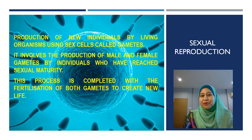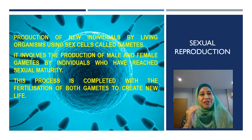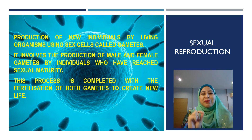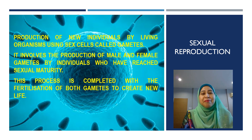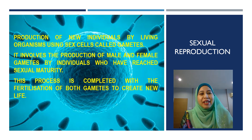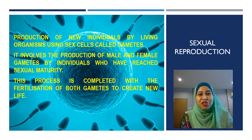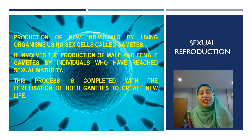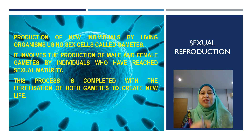Now, into sexual reproduction. Sexual reproduction produces new individuals by living organisms using sex cells, what we call gametes — that are ovum and sperm. It involves the production of male and female gametes by individuals who have reached sexual maturity. This process is completed with fertilization of both gametes to create new life.